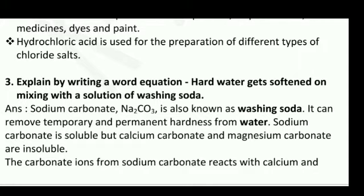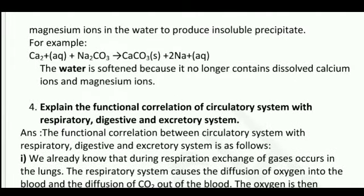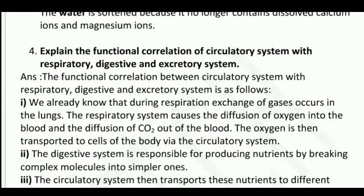The carbonate ions from sodium carbonate react with calcium and magnesium ions in the water to produce an insoluble precipitate, calcium carbonate. For example: Ca²⁺ (aq) + Na₂CO₃ → CaCO₃ + 2Na. The water is softened because it no longer contains dissolved calcium ions and magnesium ions.